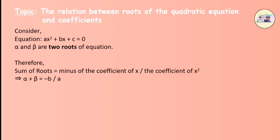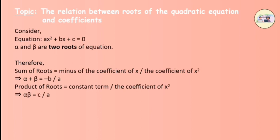Product of roots is equal to the constant term upon the coefficient of x squared. Alpha into beta is equal to c by a. Formula to remember: alpha plus beta equals minus b upon a, and alpha into beta equals c upon a.